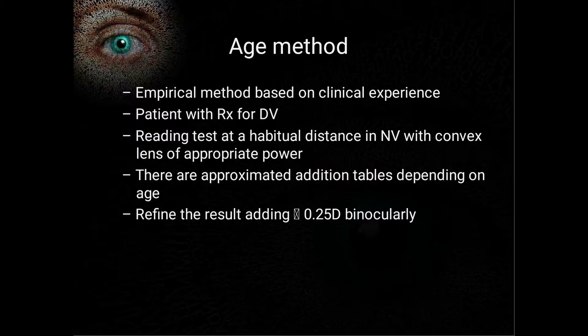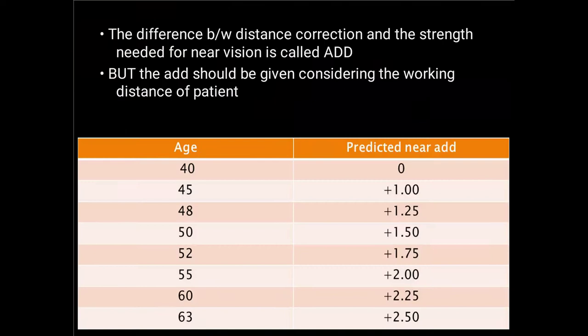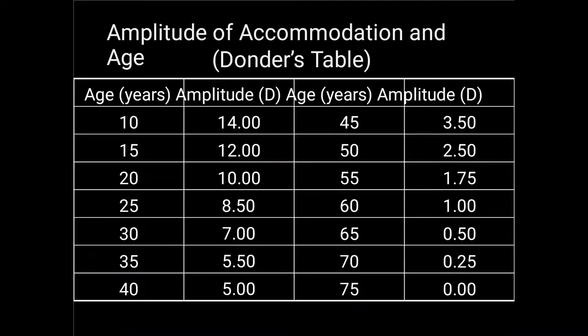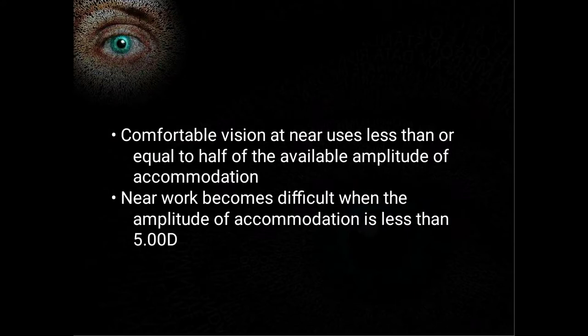The age method is based empirically on clinical experience. We do a reading test at a habitual distance in near vision with a convex lens of appropriate power. This is the Donders table: at age 40 usually no correction is needed; 40–45 give around +1.00; age 48 give +1.25; age 50 give +1.50; age 55 give +2.00. These figures may vary according to the working distance of the patient.